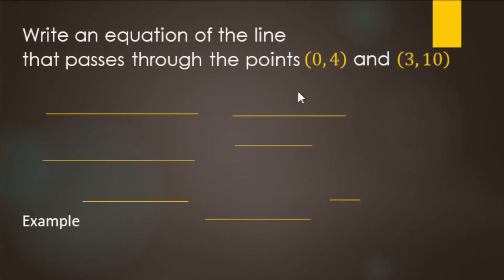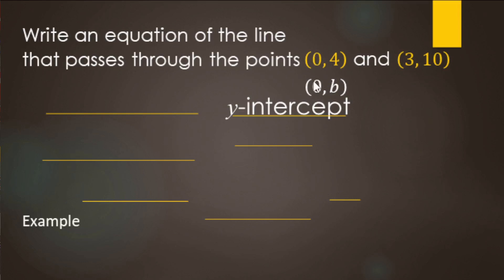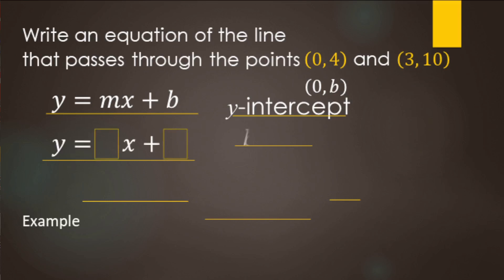We're going to write an equation for a line that goes through the two points (0, 4) and (3, 10). Notice we do have a y-intercept here — anytime you have a zero in the x position of your ordered pair, the y value is your y-intercept. The y-axis is where x equals zero, so we know the y-intercept is four. We know the y-intercept and we can find the slope, so we'll use slope-intercept form. We already know b equals four.